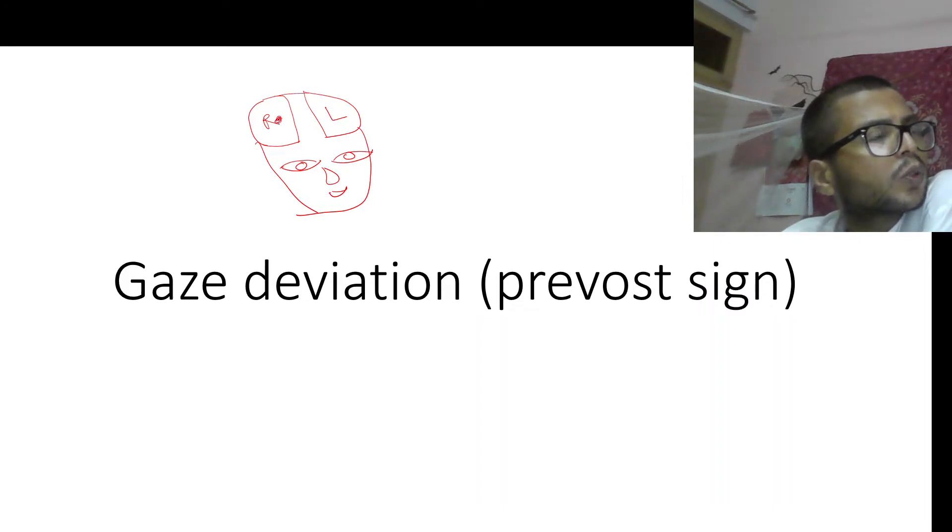So let's suppose there is a stroke on this right side. There is conjugate eye deviation towards the side of lesion, that is opposite to the side of hemiparesis. And the mechanism underlying it is...